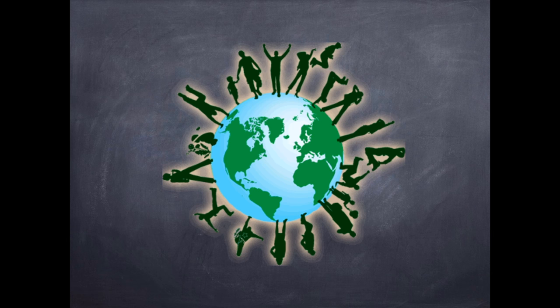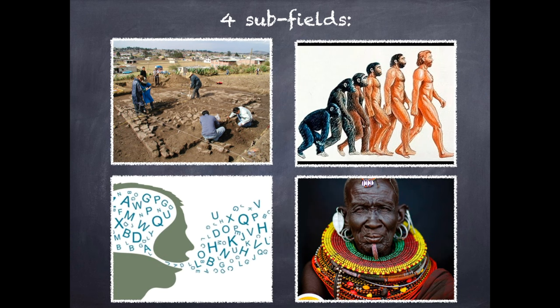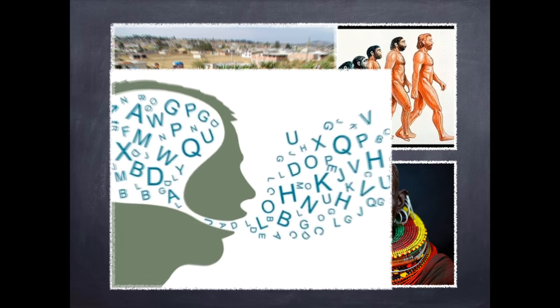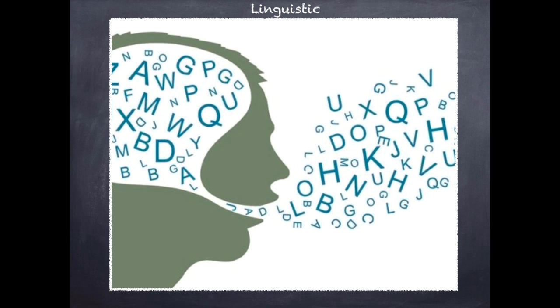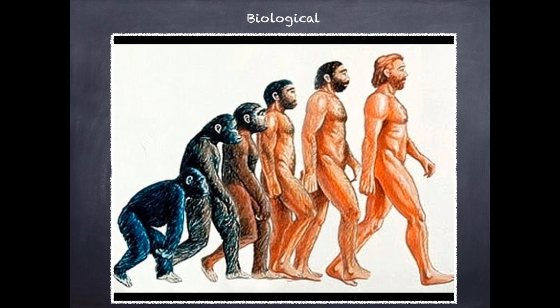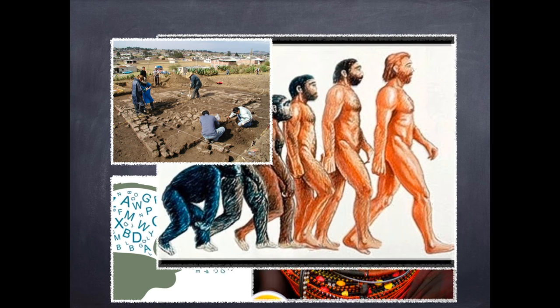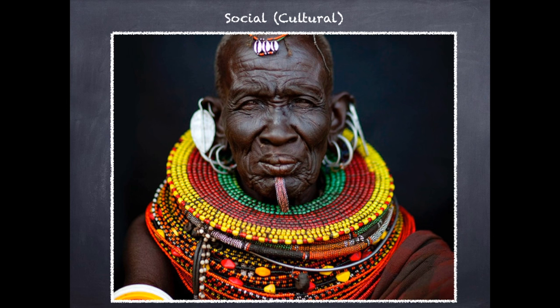Humanity is a big and broad subject, so anthropology has been split into four subfields, which together provide a holistic picture about all things human. Archaeology, studying humans of long ago. Linguistic anthropology, studying human language in all forms and its effects on everyday life. Biological anthropology, studying the evolution and ecology of humans and other primates. Lastly, there's social anthropology — also known as cultural anthropology in the US — which can be summarized as the study of human culture, society, and human relationships.